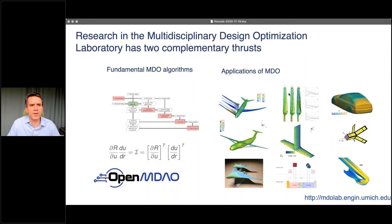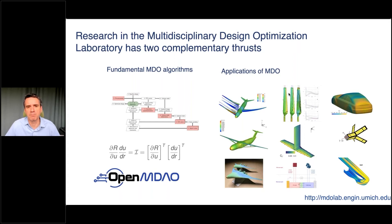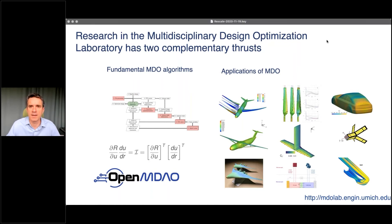A quick overview of the MDO lab: our research has two main thrusts. One is the development of fundamental algorithms for MDO that can be applied broadly. The other is applications — particularly aircraft design — which really tests the algorithms in practice. We also work on car aerodynamics, wind turbine design, hydrofoil design, battery satellites, and other applications in collaboration with other investigators.